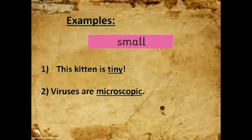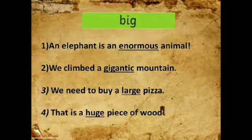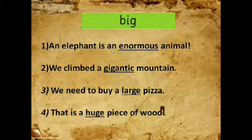For example, instead of saying this kitten is small, you could say this kitten is tiny. Or instead of saying viruses are small, you could say viruses are microscopic — very, very small. For big, instead of saying an elephant is a big animal, you could say an elephant is an enormous animal. It has the same meaning — like very, very big.